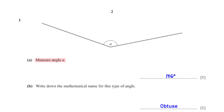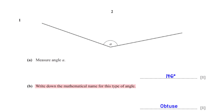Measure angle A — when we measure the angle we get 146 degrees. Write down the mathematical name for this type of angle. 146 degrees is between 90 degrees and 180 degrees, and so it is an obtuse angle.